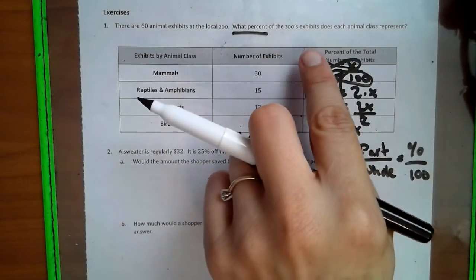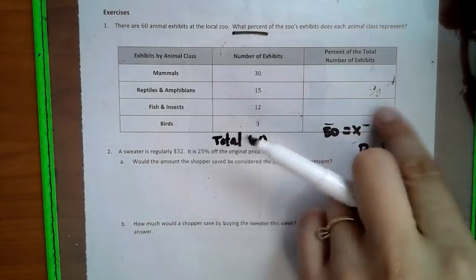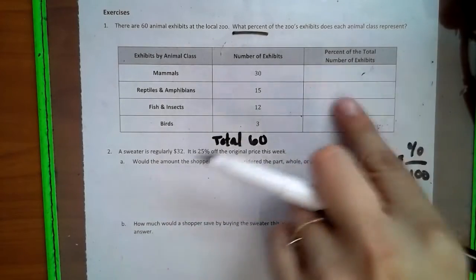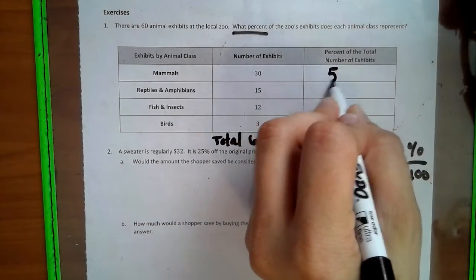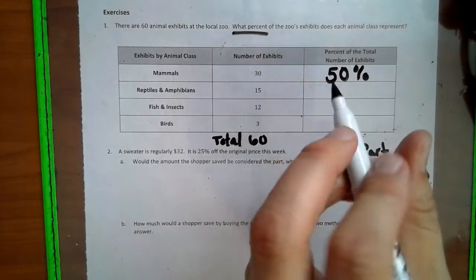So our percentage for the mammals is 50% of all of these animals are mammals. Okay. So if you didn't get that, all you have to do is rewind me. That's the cool thing about it. Unlike being live in a class.